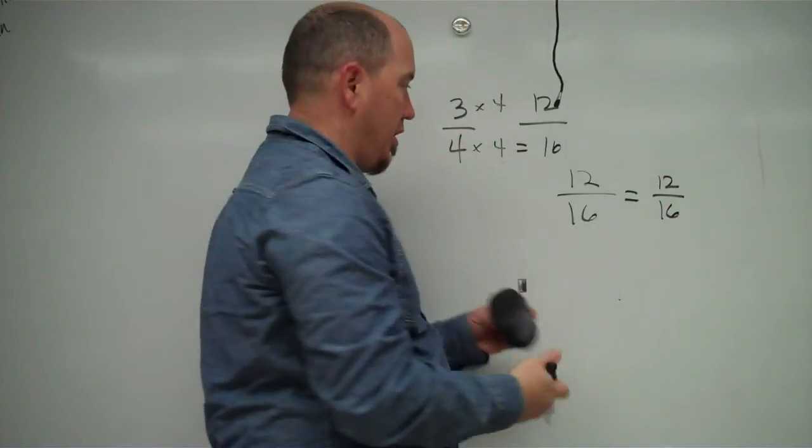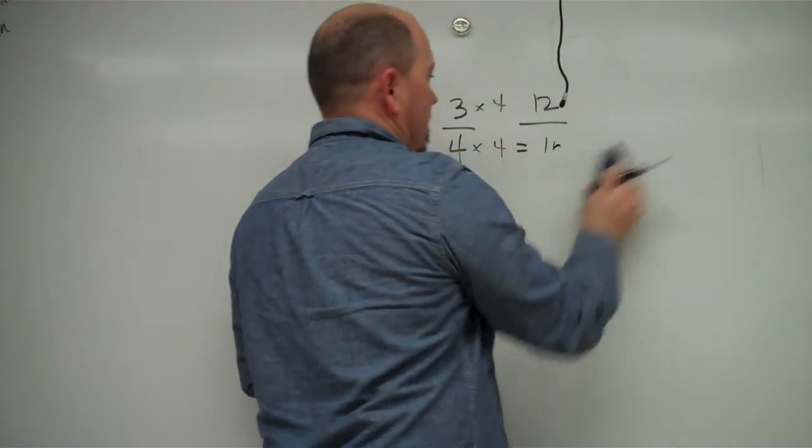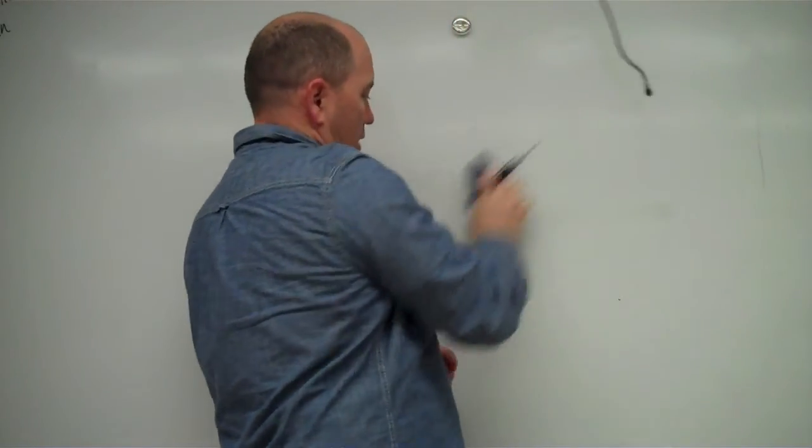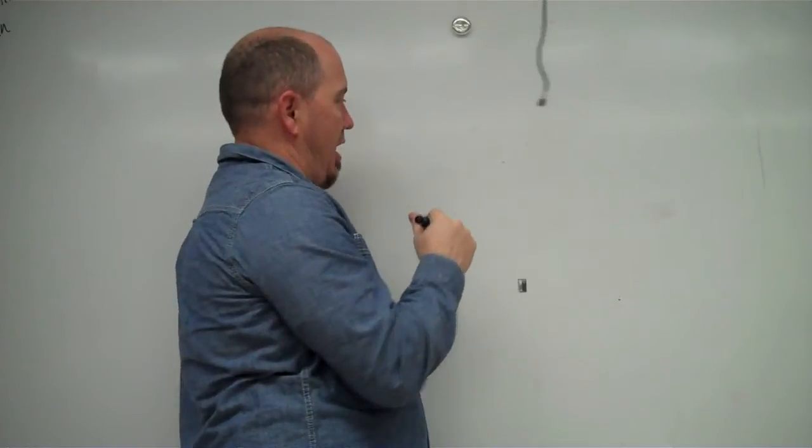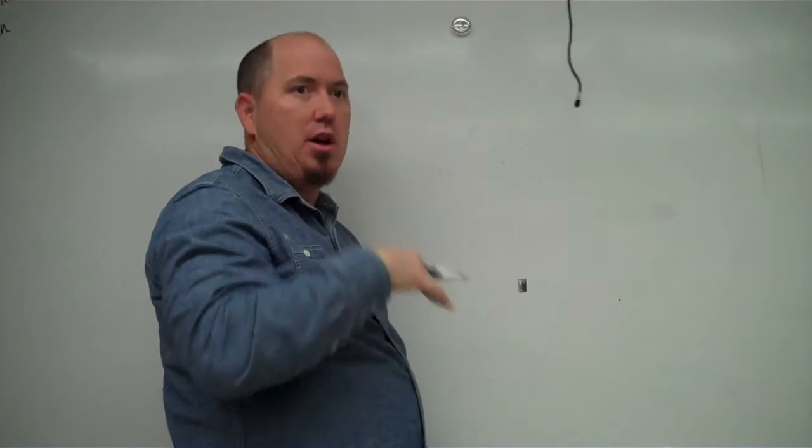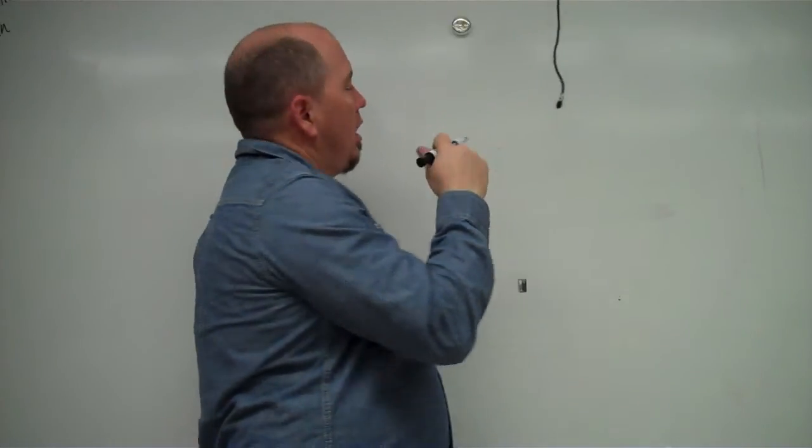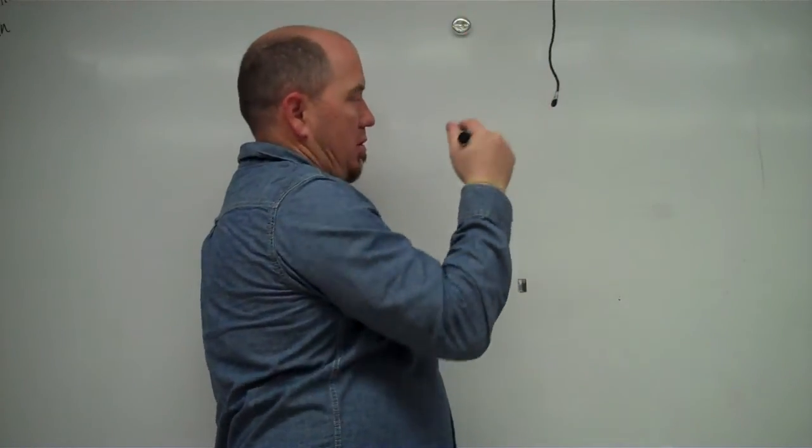Okay. So another way to find equivalent fractions. So one last quick thing we'll do is finding, like I said, that's a good way to find the common denominator. Remember, whatever you do to the bottom number, you have to do to the top number.